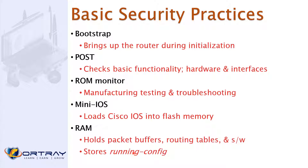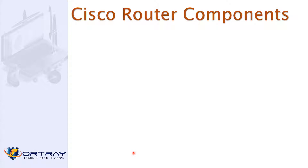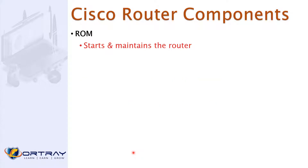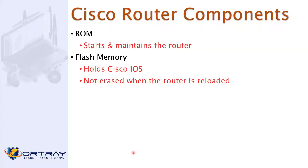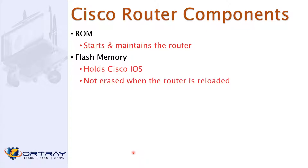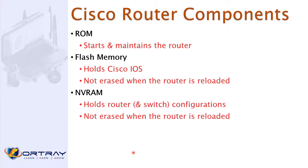The key components include ROM, which starts and maintains the router, and flash memory, which holds the Cisco IOS — flash is not erased when the router reloads. RAM holds the running router or switch configuration, and that is erased when the router reloads.